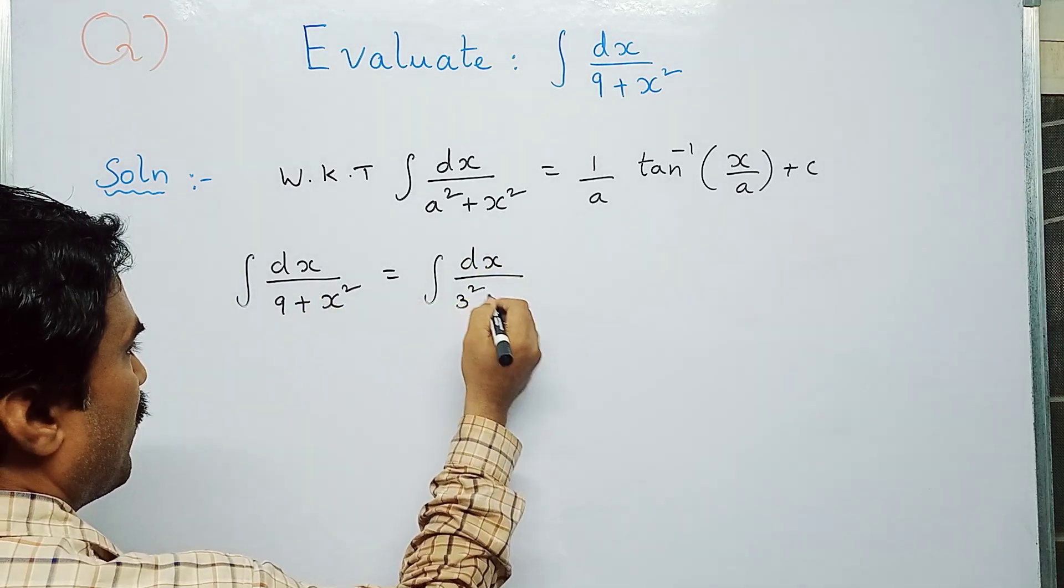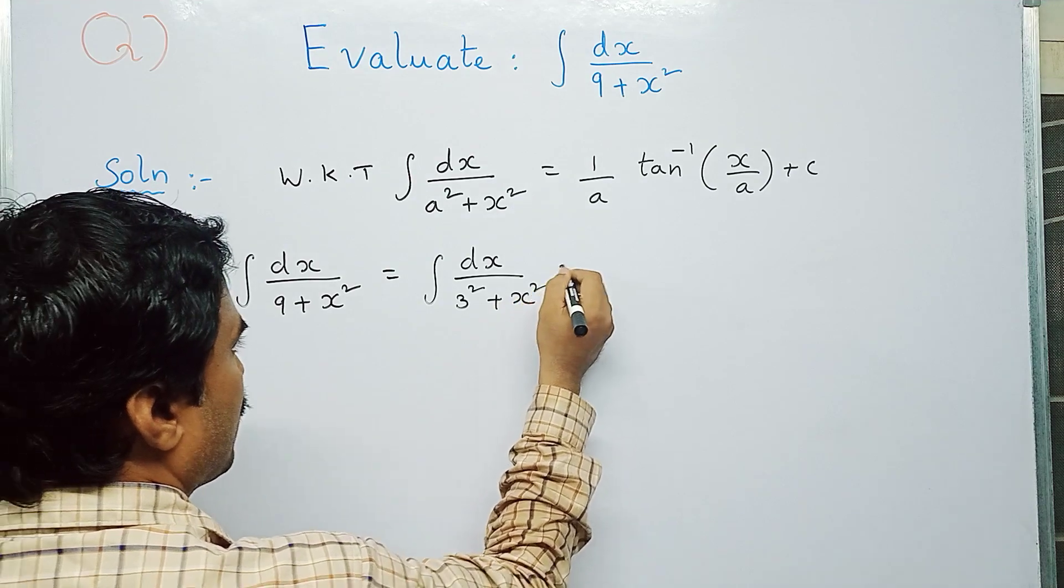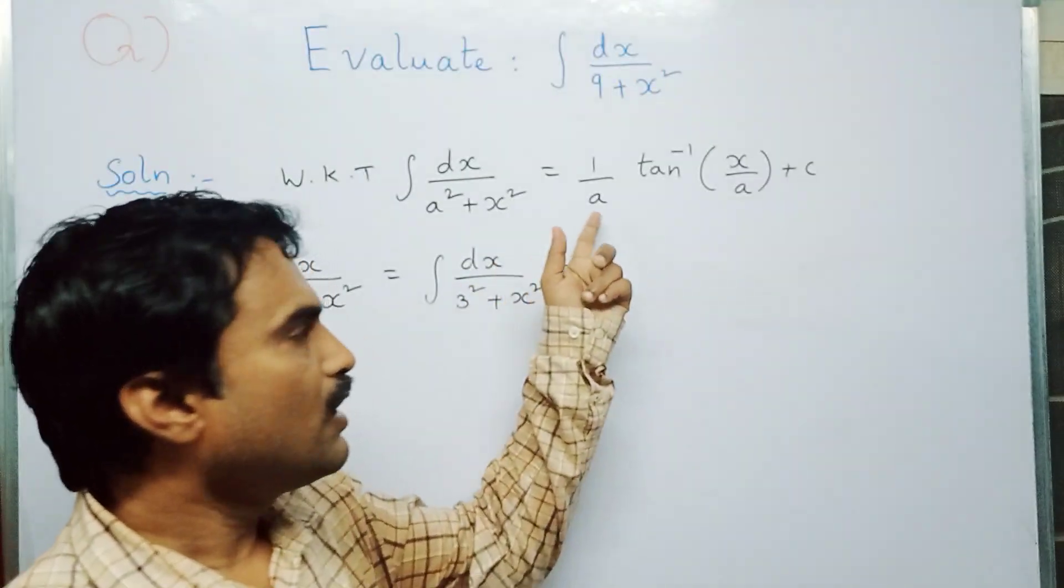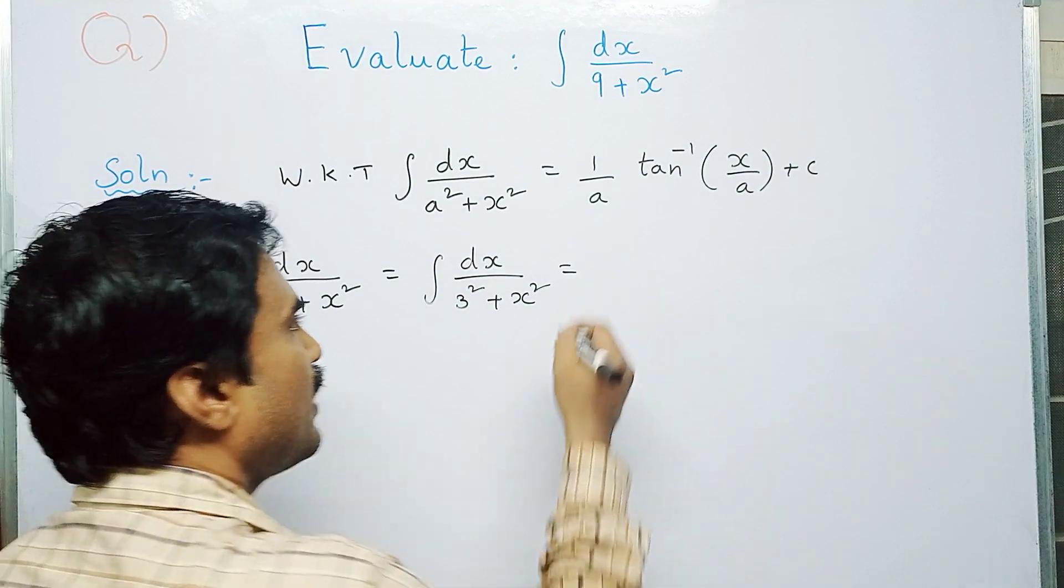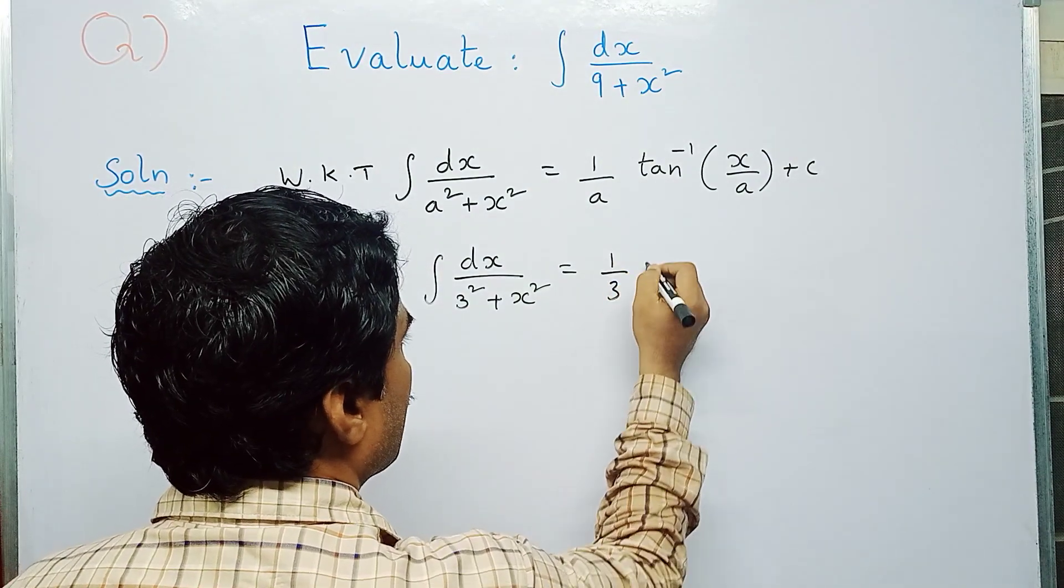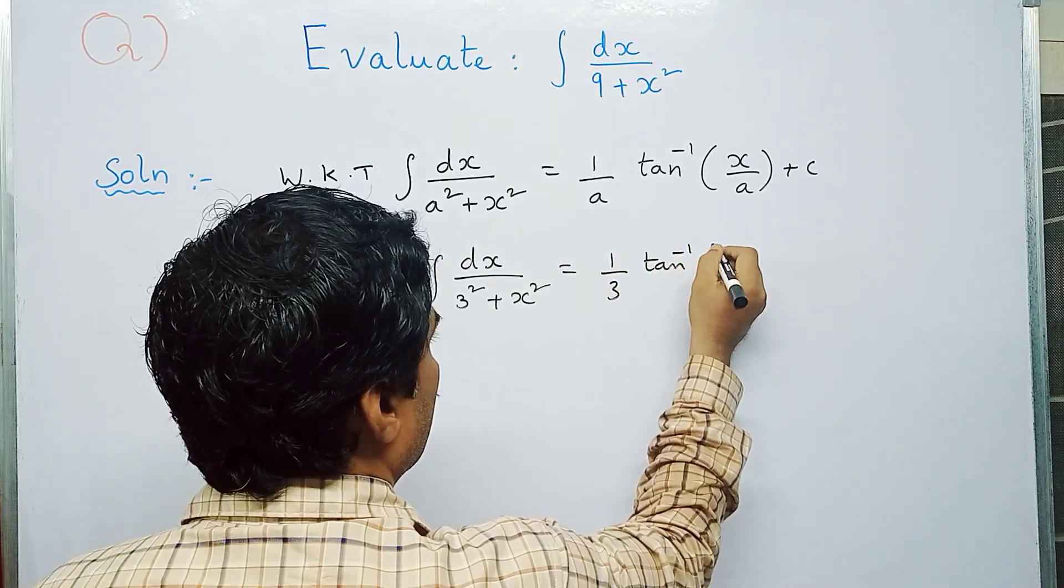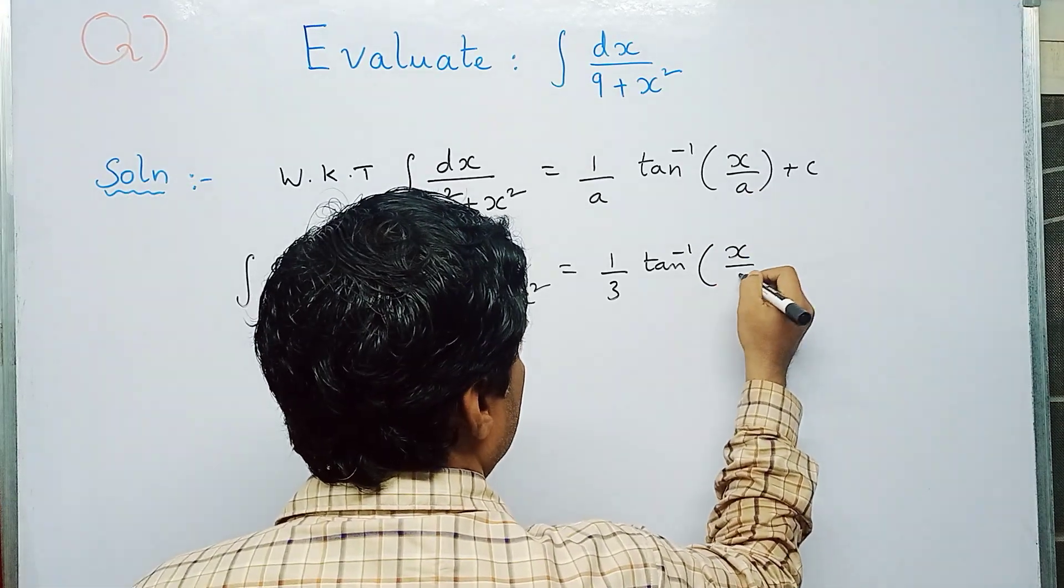Now I can apply this formula. So here the a value is 3, so I can write this as 1 by 3 tan inverse of x by a, that is 3, plus c.